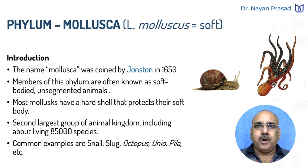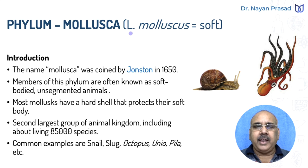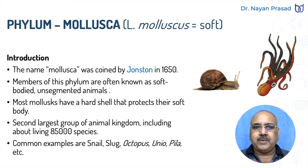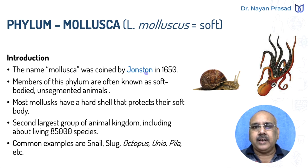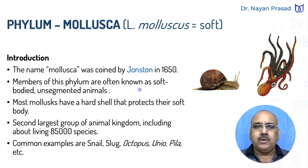Mollusca is the group of soft-bodied animals, and you must have heard the names snail and octopus — these are examples of this phylum. The term Mollusca has been derived from Latin, in which 'molluscus' means soft. Snail and octopus have soft, unsegmented bodies. The name Mollusca was coined by Johnston in 1650 AD. Members of this phylum are often known as soft-bodied unsegmented animals.